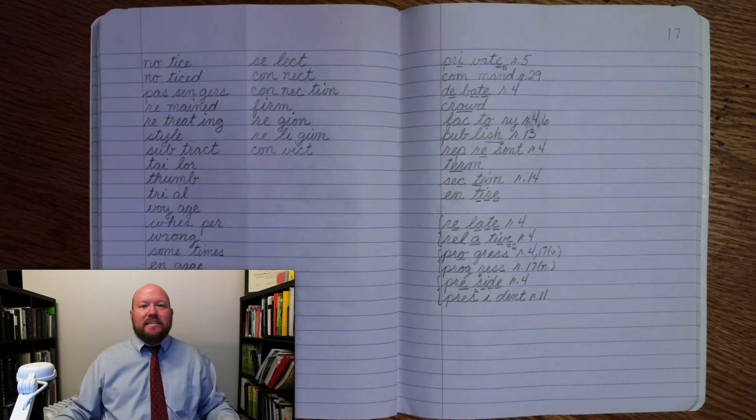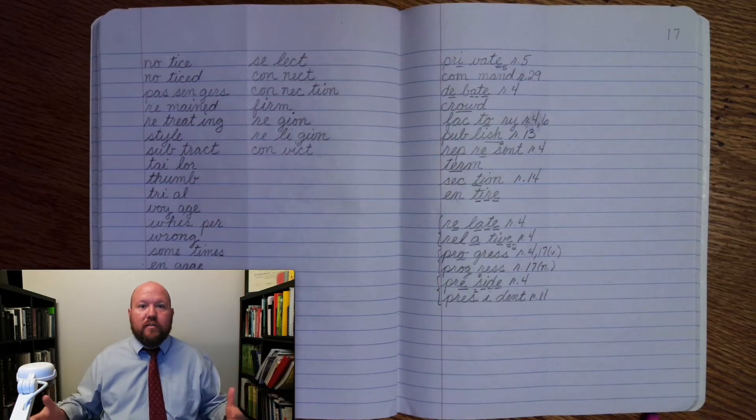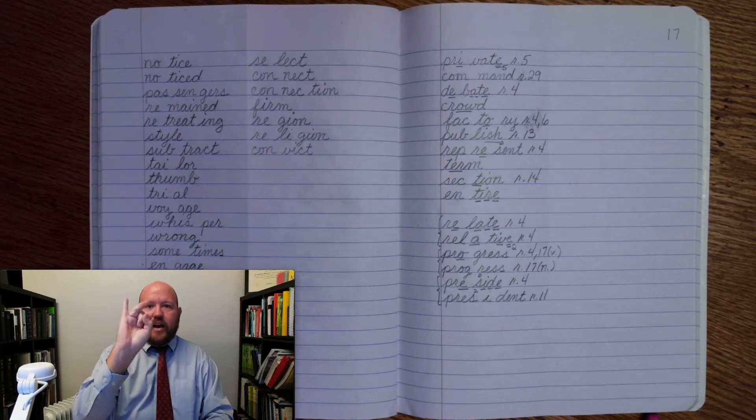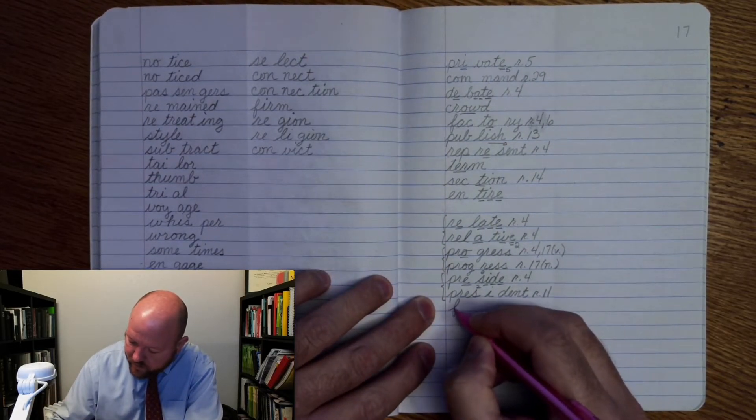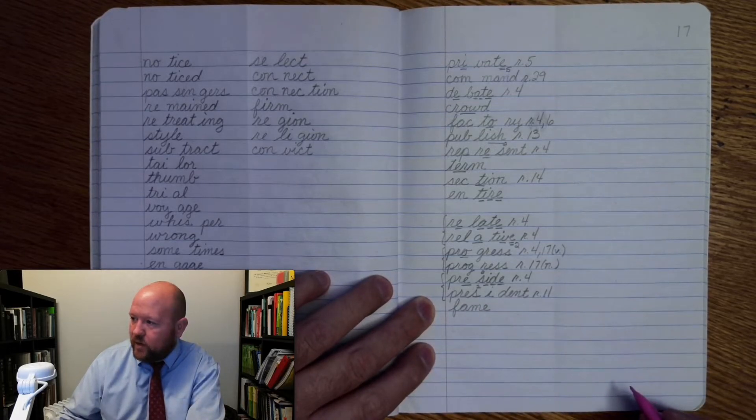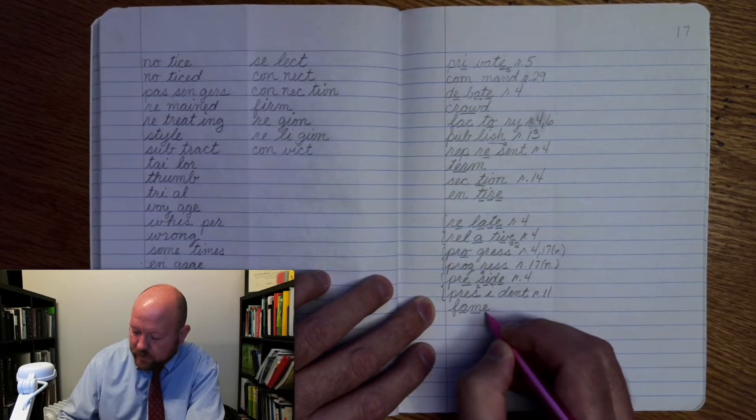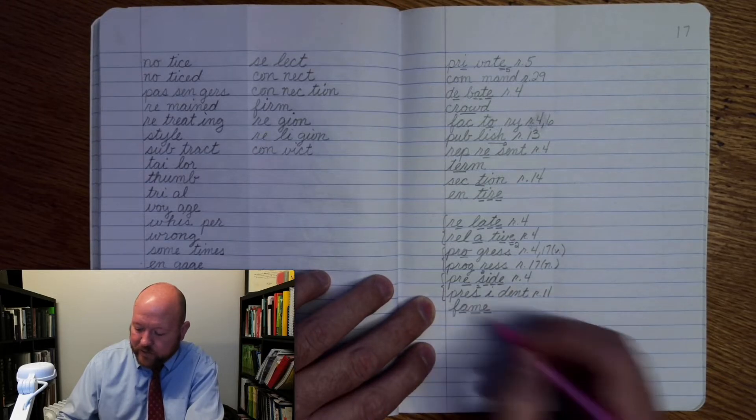The next word is fame. So, fame is what people think of you. Do they know you? That is your fame. Fame. Base word fame. F-a-m-e. Fame. Write fame. F-a-m-e. Fame. Markings. F-a-once. M-once. E-once. Fame. This is job one of the silent final e. It's allowing the a to say a.